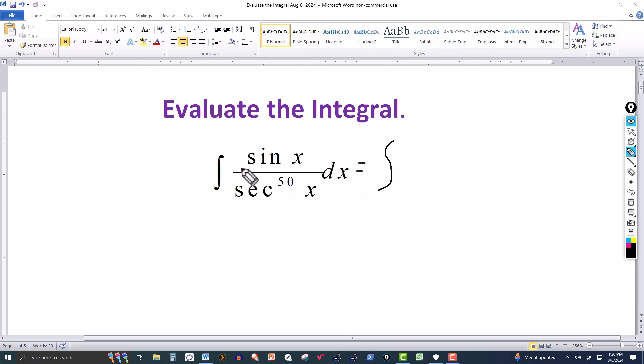Because they're reciprocals, secant is 1 over cosine. So that means if we take this up, it changes to cosine by multiplying the denominator and numerator by cosine to the 50th. We're going to have cosine of x to the 50th and sine of x dx.